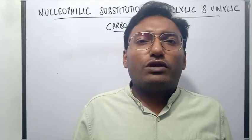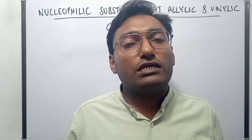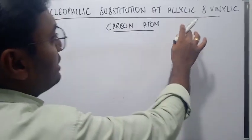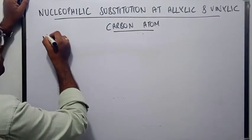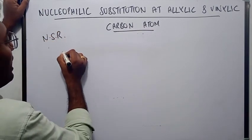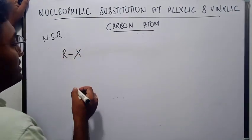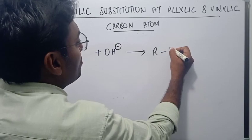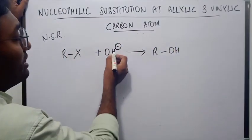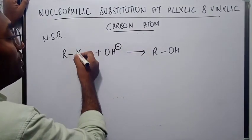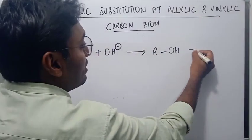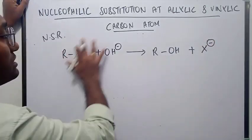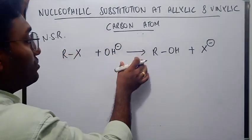Welcome dear students. Today we are going to discuss nucleophilic substitution reaction at allylic and vinylic carbon atoms. Nucleophilic substitution reaction is shown by alkyl halides. What happens is an alkyl halide reacts with a nucleophile and gives a product where the incoming nucleophile replaces the old nucleophile. Here the incoming nucleophile is OH⁻, it replaces the older nucleophile which is X, and the older nucleophile is expelled out as a leaving group.